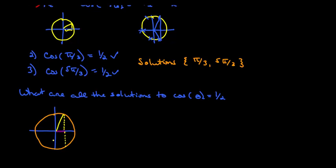So between 0 and 2 pi, the two angles are the first one is pi over 3 plus 2k pi, where k is an integer.